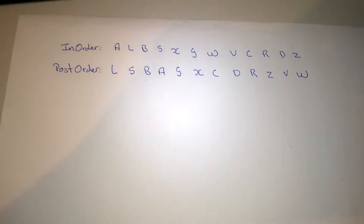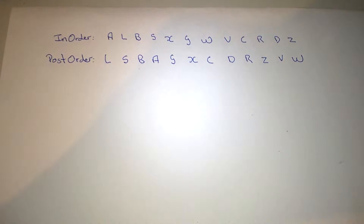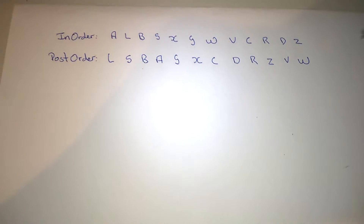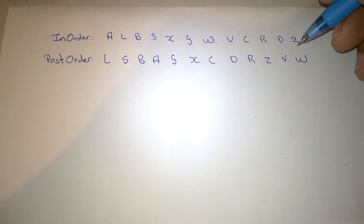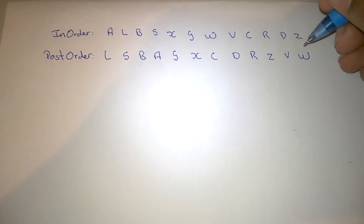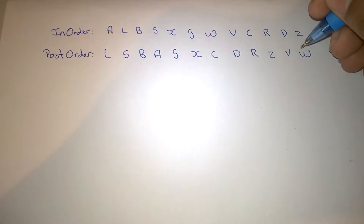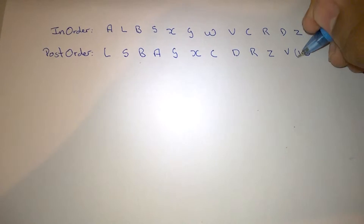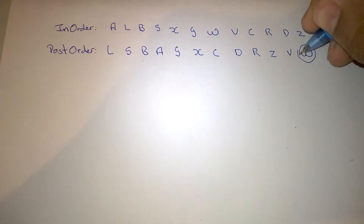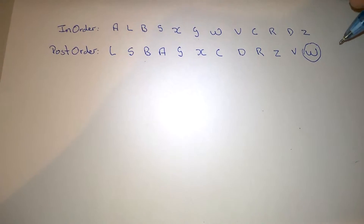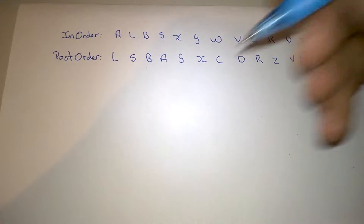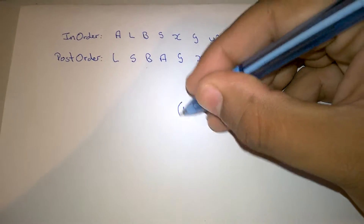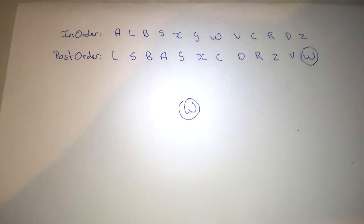This is very similar to the in-order pre-order traversal, except this time we start from the right-hand side, which is the end of the post-order. We begin by finding the first value, which is W. This will be the head of our tree, or the root.